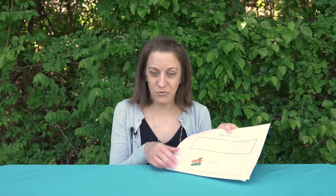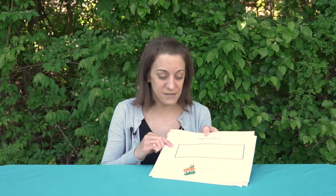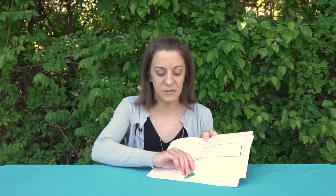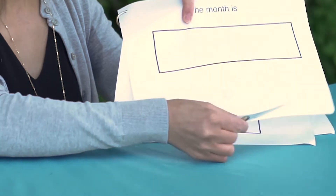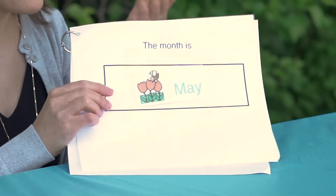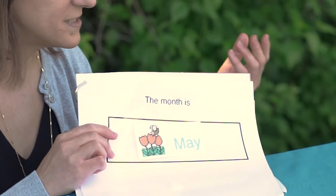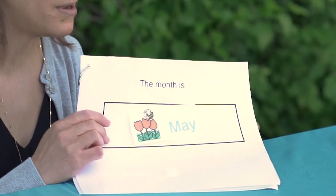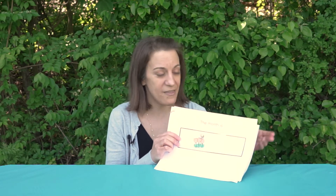I go through the month and have the students label what month it is. They'll simply pick up the icon and place it onto the square. This is a mini model of exactly what I have on my easel. The students will do this independently at their table or with the support of a teacher, and it helps keep them engaged and actively involved in the morning circle time.